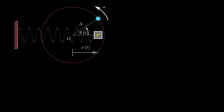Let's establish a connection between the angular displacement theta of the sphere and the displacement of the mass by considering the horizontal displacement of the sphere. As time progresses, the value of theta changes, leading to a corresponding alteration in the displacement of the mass. This relationship between angular displacement theta and the linear displacement of the mass is described by the expression x(t) = A cos(theta). As discussed, angular frequency omega represents the rate of change of angular displacement, expressed as omega = theta / t, which we can reformulate in terms of theta and substitute into the displacement equation.